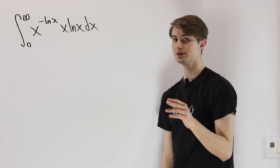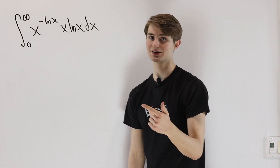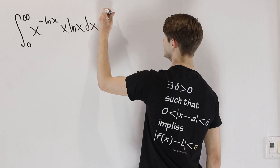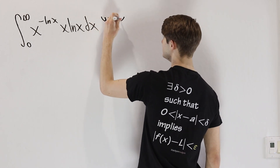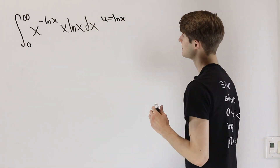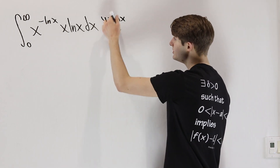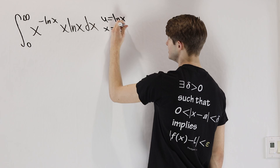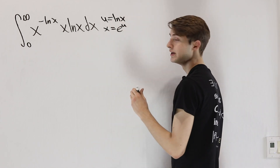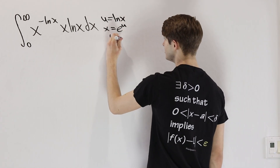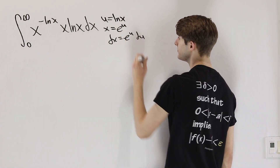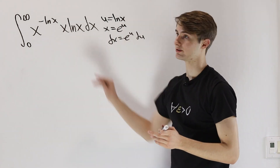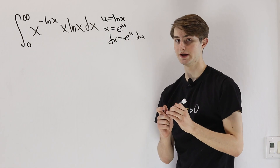If the whole integral is in terms of x and natural log x, 99% of the time it's going to help out a ton to substitute u equals natural log x. We can take e to the power of both sides and get that x equals e to the u, and therefore dx equals e to the u du. So it doesn't really matter whether we have a du ready in this integral — we can do the substitution anyway.